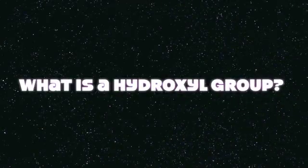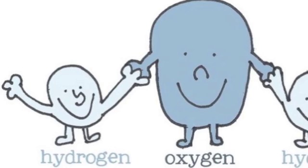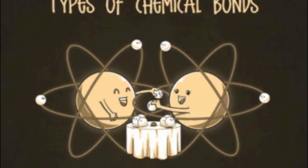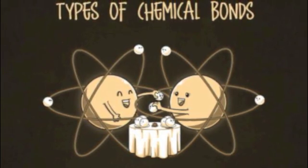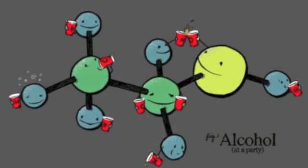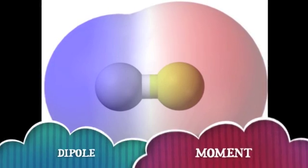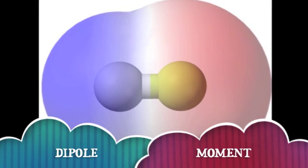A hydroxyl group is a functional group comprised of one oxygen and one hydrogen atom. When bonded to a carbon chain, this compound is called an alcohol. One cool thing about a hydroxyl group is that it has a strong dipole moment.